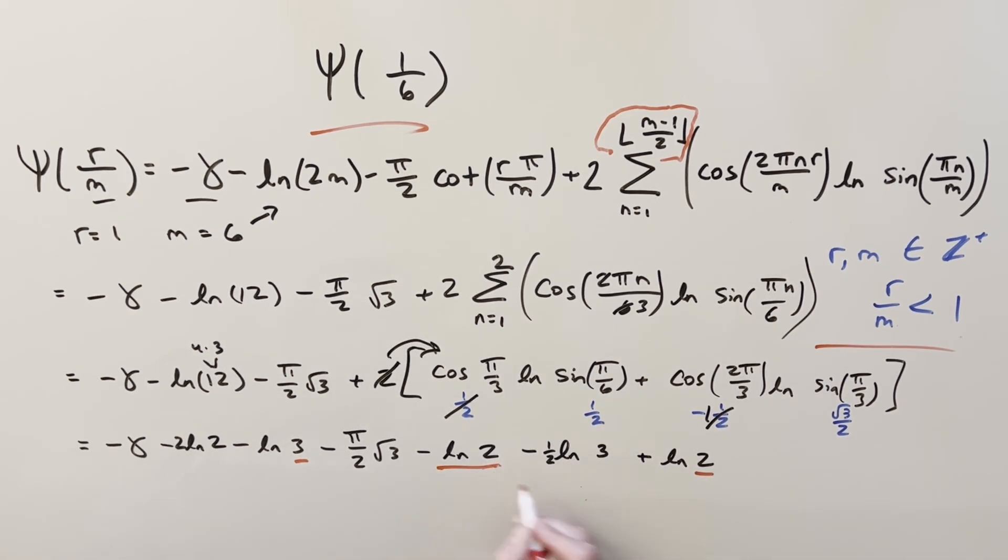So then what happens is I have all my ln 2 terms here, and then get rid of this, and we have a couple of ln 3 terms that we can combine together. But then this one's going to cancel with this one. Let me just reorder it and see what we have here.